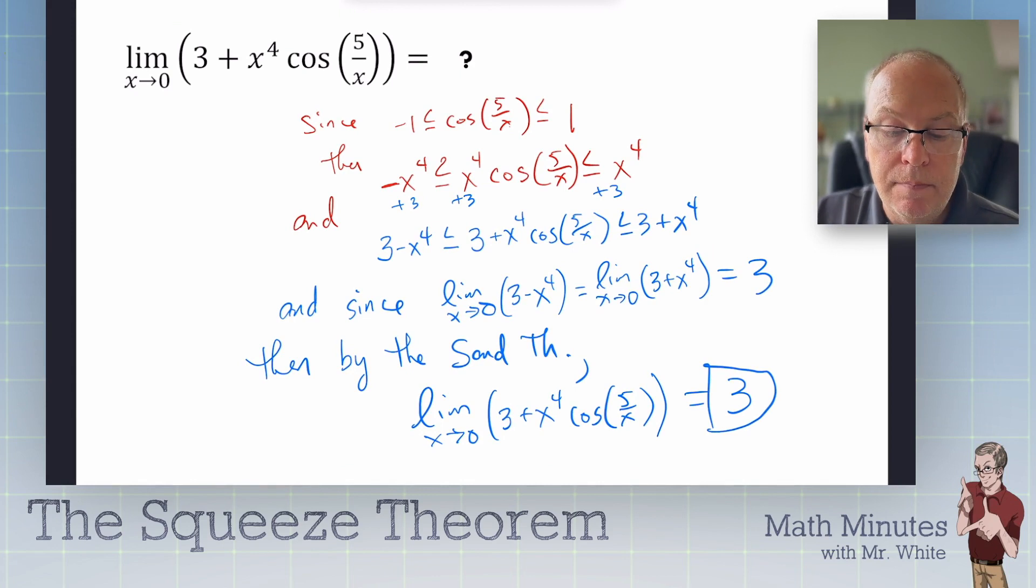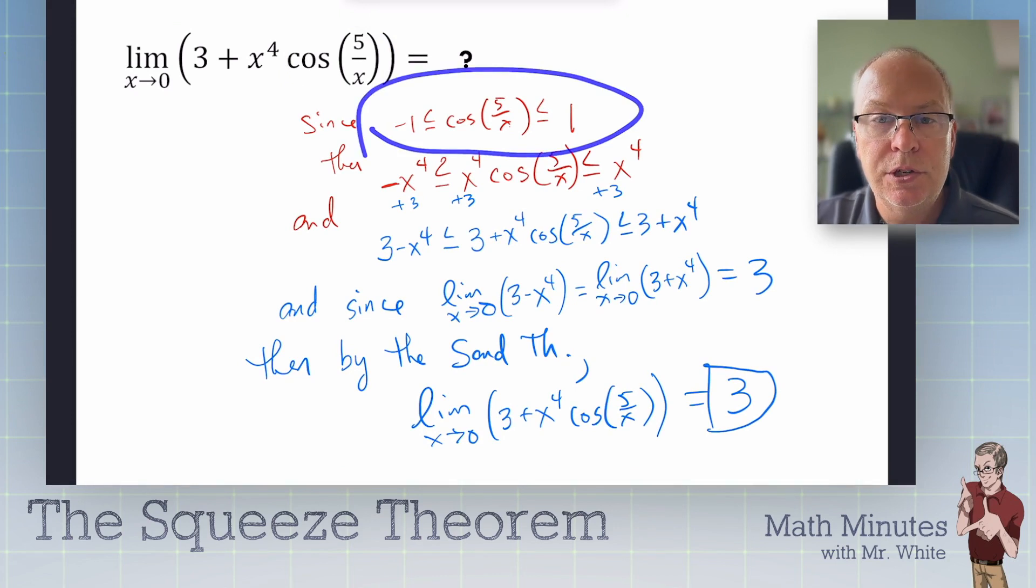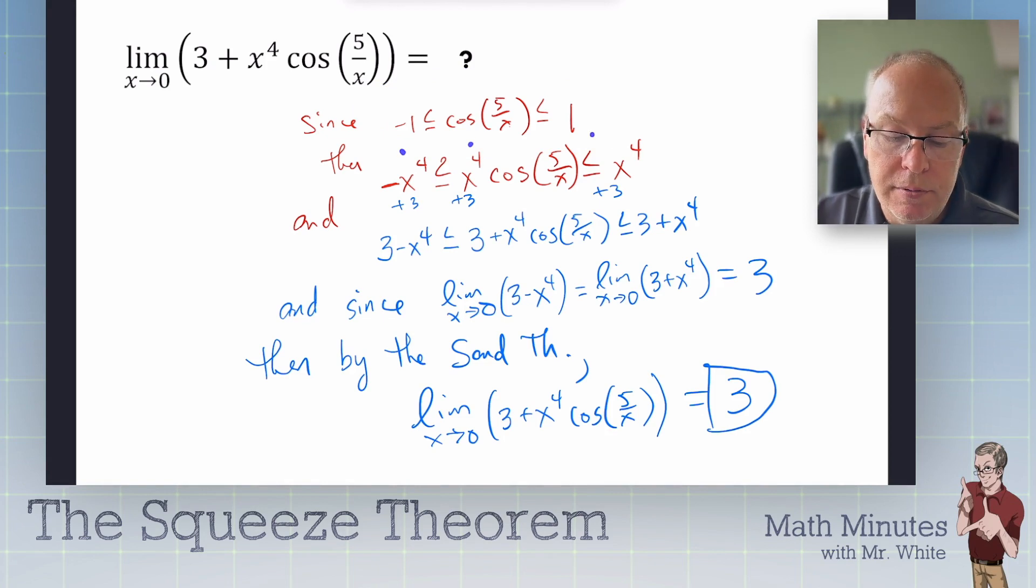So, you start out, every time, you start out with a statement of truth about the oscillating part, since cosine ranges from negative 1 to 1 always, then what you could do is figure out what to multiply all three sides by, and go ahead and do that, and here I even had to add on all three sides, so that I arrived at the same interior function here, then I find the limits of the outside. So, I say, and since those two limits are equal, you show how they're equal, and they're equal to the same number, then you just declare, by the squeeze theorem, by the sandwich theorem, the final answer is 3. So, that should have felt very similar to the first one I did. I've got one more that's a little bit different, check this out.